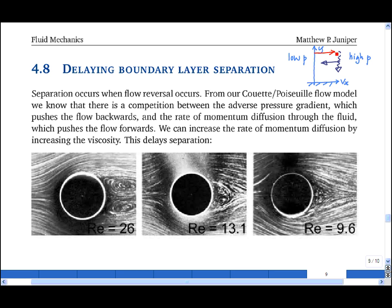If the pressure gradient is strong or the momentum diffuses down slowly, the boundary layer velocity profile reverses and separation occurs.